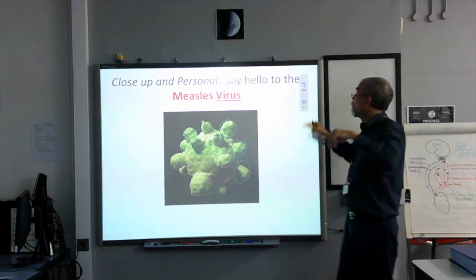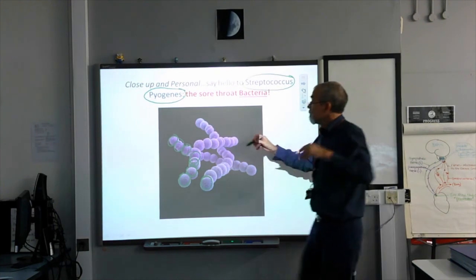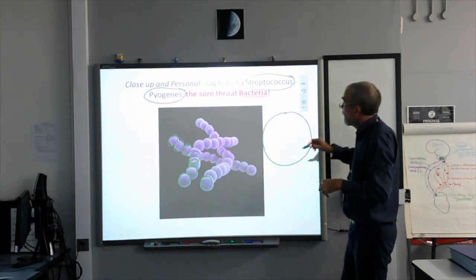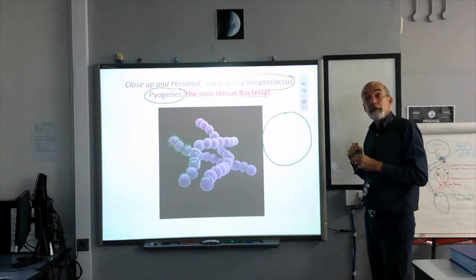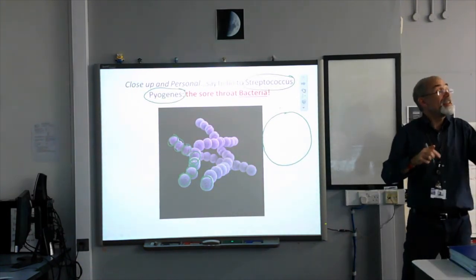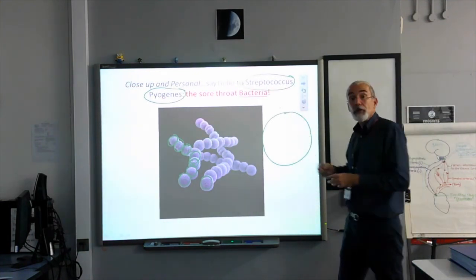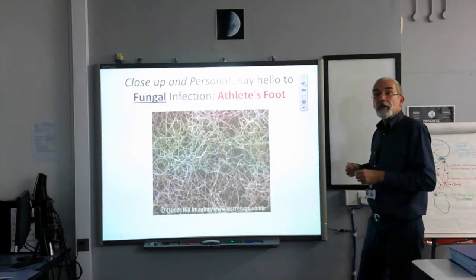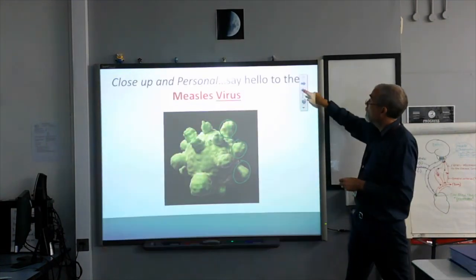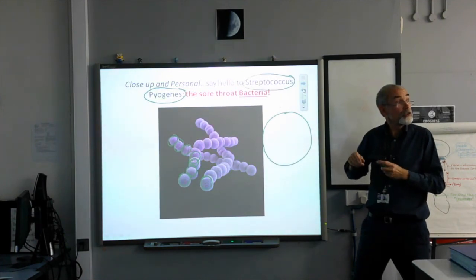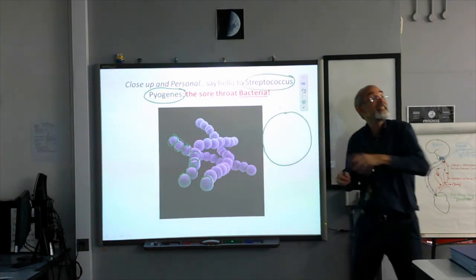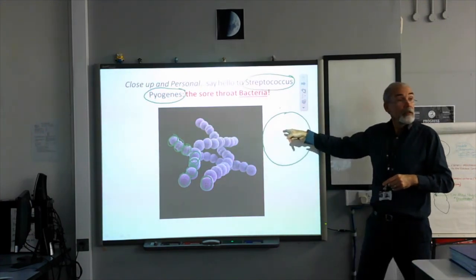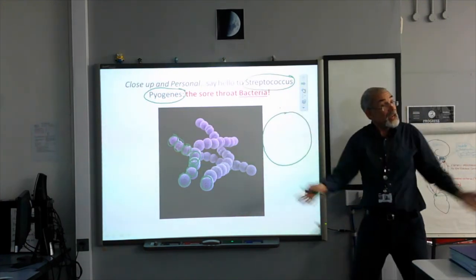To get an idea of scale: if a bacteria is drawn large, a virus is just a dot in comparison — teeny tiny. And a bacteria is significantly smaller than one of our cells. Our cells would be the size of the board; a bacteria is that big; a virus is that big. This is athlete's foot, close up and personal — this is the stuff that is growing in between your toes, or growing in between your nails.